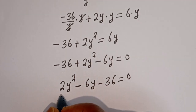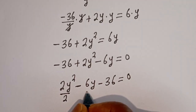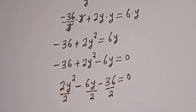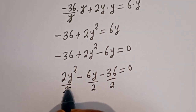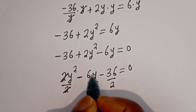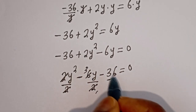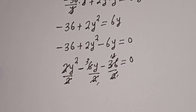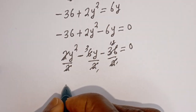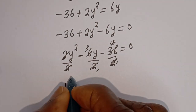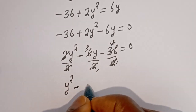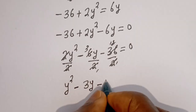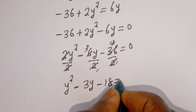We can reduce this by dividing all terms by 2. Dividing each term by 2: 2y squared divided by 2 gives y squared; 6y divided by 2 gives 3y; 36 divided by 2 gives 18. So we get y squared minus 3y minus 18 is equal to 0.